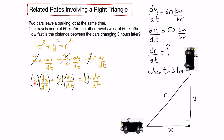To find x at t equals 3 hours: the car travels west at 50 km/h, so x equals 50 times 3 equals 150 kilometers. Similarly, y equals 60 times 3 equals 180 kilometers.